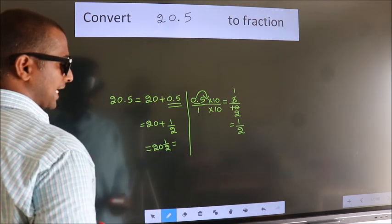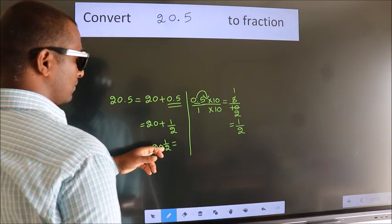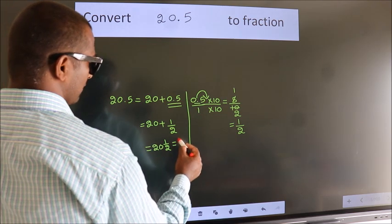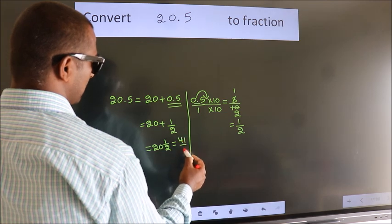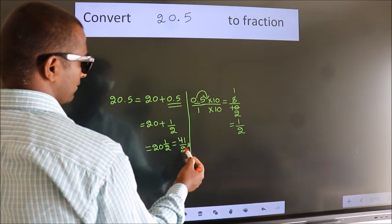In improper fraction, it is 20 into 2, which is 40 plus 1. 41 by 2 is our fraction.